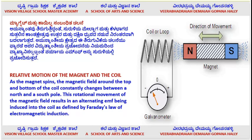Induced EMF is produced during this mechanism — this is called electromagnetic force. As the magnet spins, the magnetic field around the top and bottom of the coil constantly changes in the forward and backward direction between the north and south pole. This rotational motion of the magnetic field results in an alternating EMF — that is, electromotive force — being induced into the coil, as defined by Faraday's law of electromagnetic induction. This is a very important point, appearing in almost all examinations.